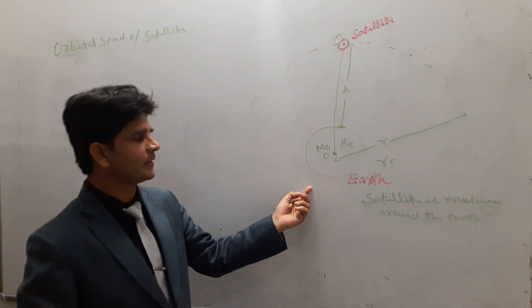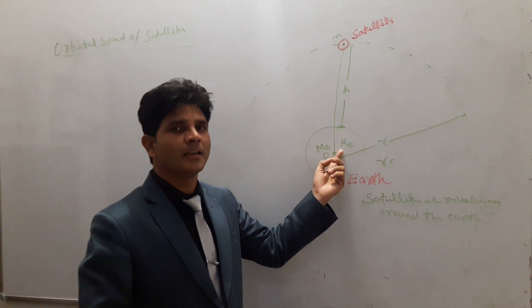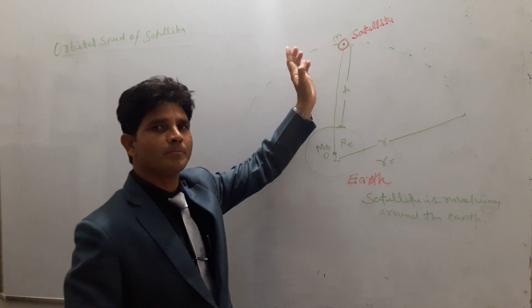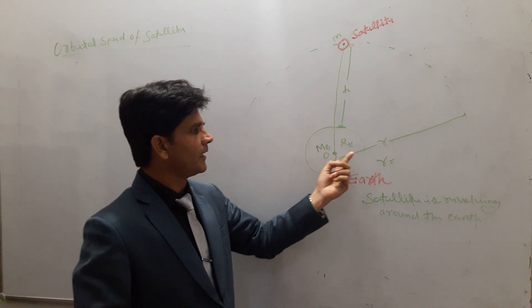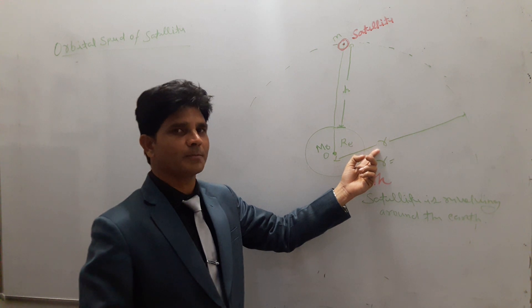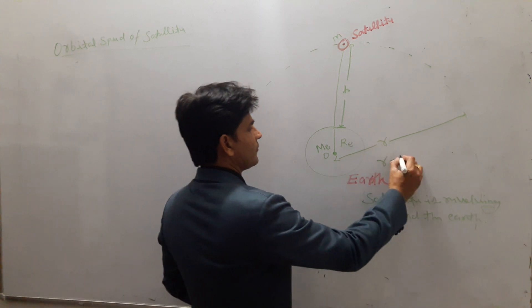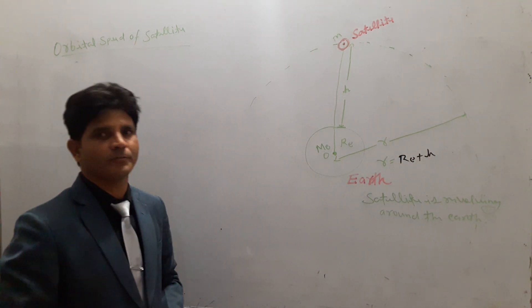In this diagram we can see, this is the Earth having the mass M_E and the radius R_E. And the satellite of mass m is revolving around the Earth in an orbit of radius r. So this r must be equal to the radius of Earth plus the height of the satellite from the Earth's surface.